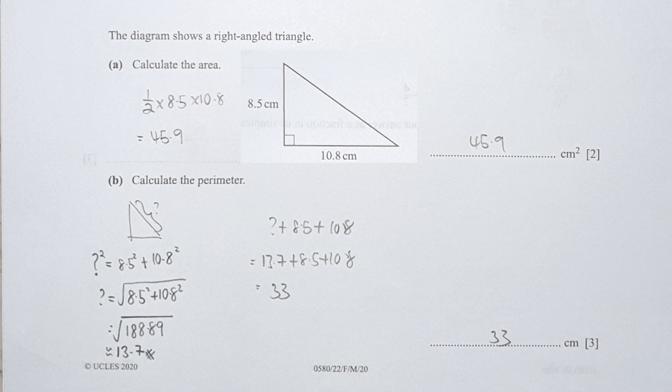For part B, calculating the perimeter, aside from calculating the hypotenuse, remember to add back the original base and height to satisfy the question. I use Pythagorean theorem and identify the hypotenuse as 13.7. Add it with 8.5 and 10.8, and you should get 33.